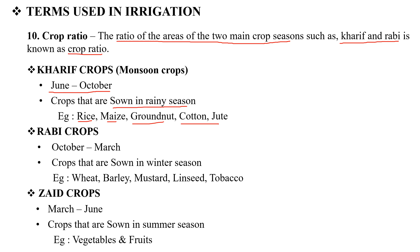Rabi crops are the winter season crops. The crop season is from October to March. For example, wheat, barley, mustard, linseed, and tobacco are the rabi crops.